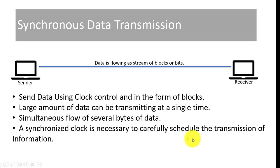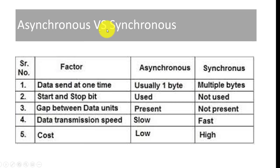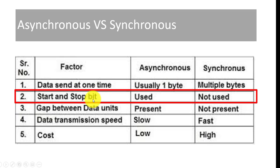A synchronized clock is necessary to carefully schedule the transmission. We have seen that data is sent using clock control. The synchronized clock schedules which information is to be transferred and when. Since this is an extra functionality added — the synchronized clock — it is slightly more costly. Comparing synchronous and asynchronous: in terms of data sent at one time, asynchronous transfers one byte at a time while synchronous transfers multiple bytes. Similarly, asynchronous uses start and stop bits while synchronous does not.